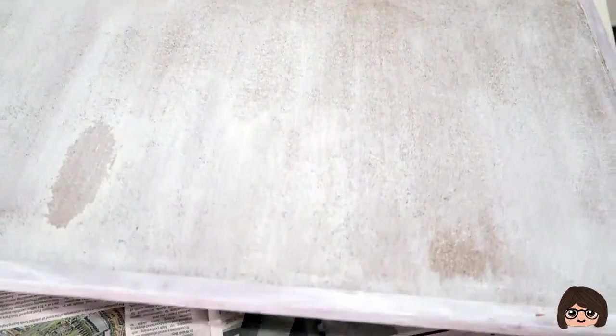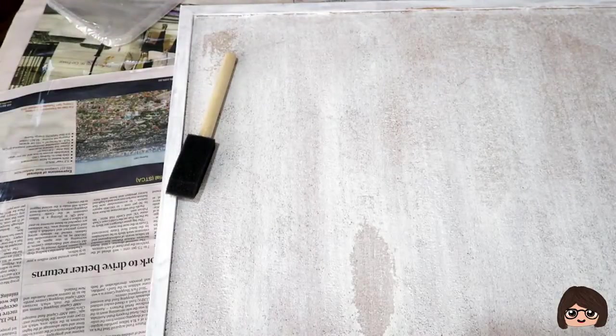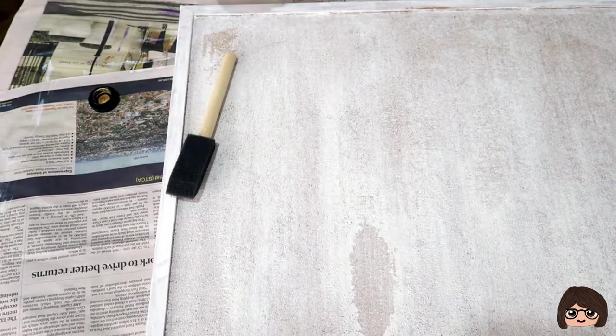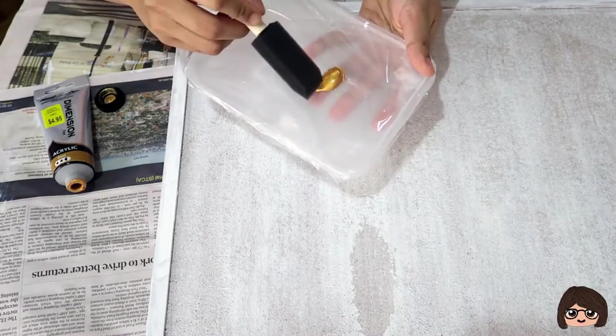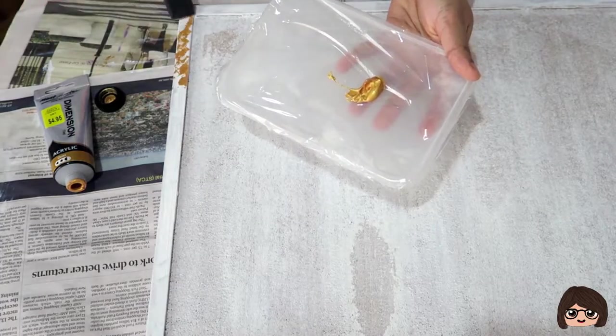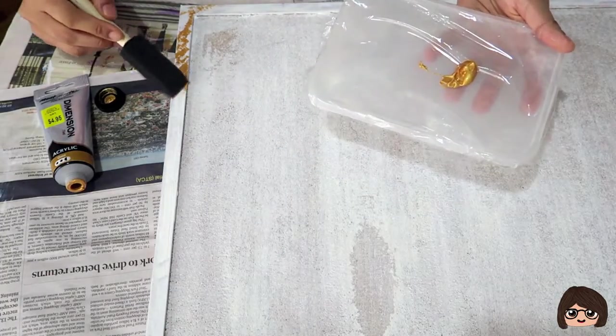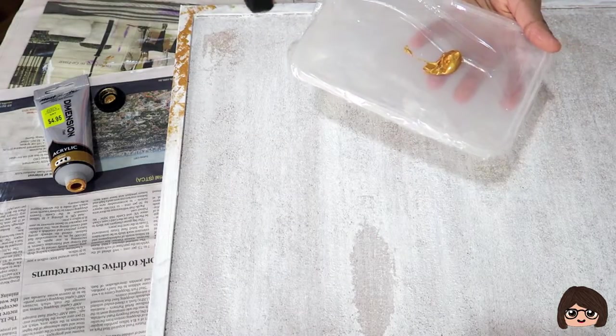Next, you want to get your gold paint, brush, and sponge, and you can paint your cork board border anything that you want. But for me, I wanted a vintage gold look onto my cork board, that's why I got a gold paint and then I painted it away with just a little bit of dabbing motion.